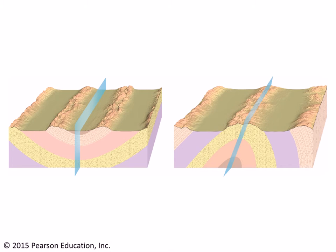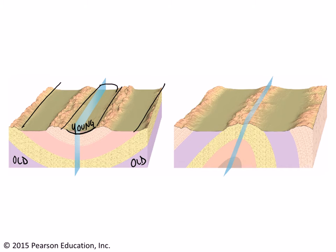Here we have an example of a syncline on the left and an anticline on the right. These images demonstrate that we have layers of different age. The oldest layers on the syncline diagram are purple in color, and the youngest layers are in the middle. The key to recognizing a syncline is that younger layers are in the middle and older layers are on the edges or flanks of the fold. The opposite is true with an anticline, where the oldest layers are in the middle and they get younger toward the edge.